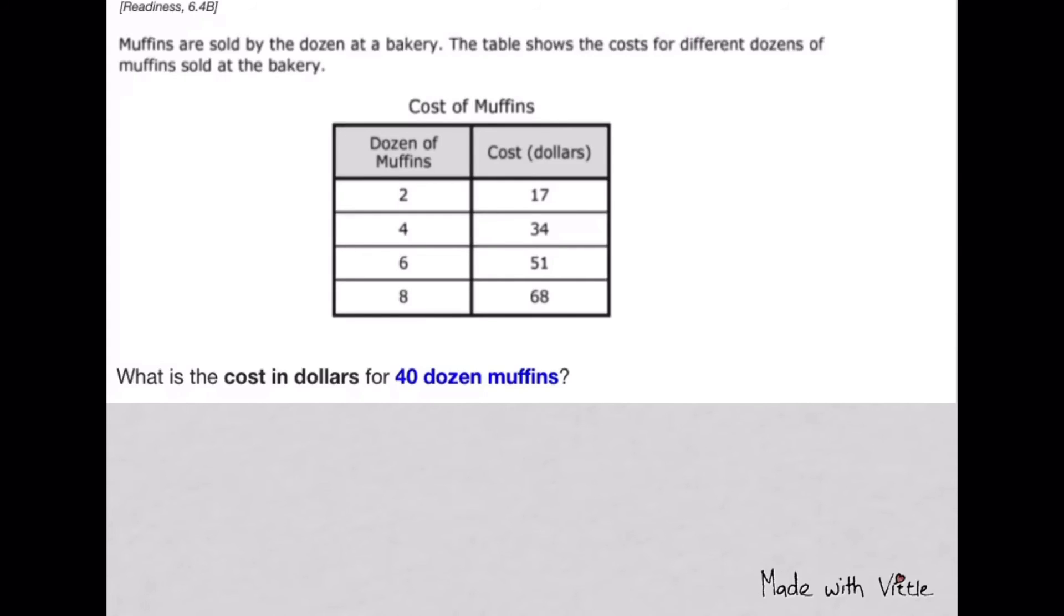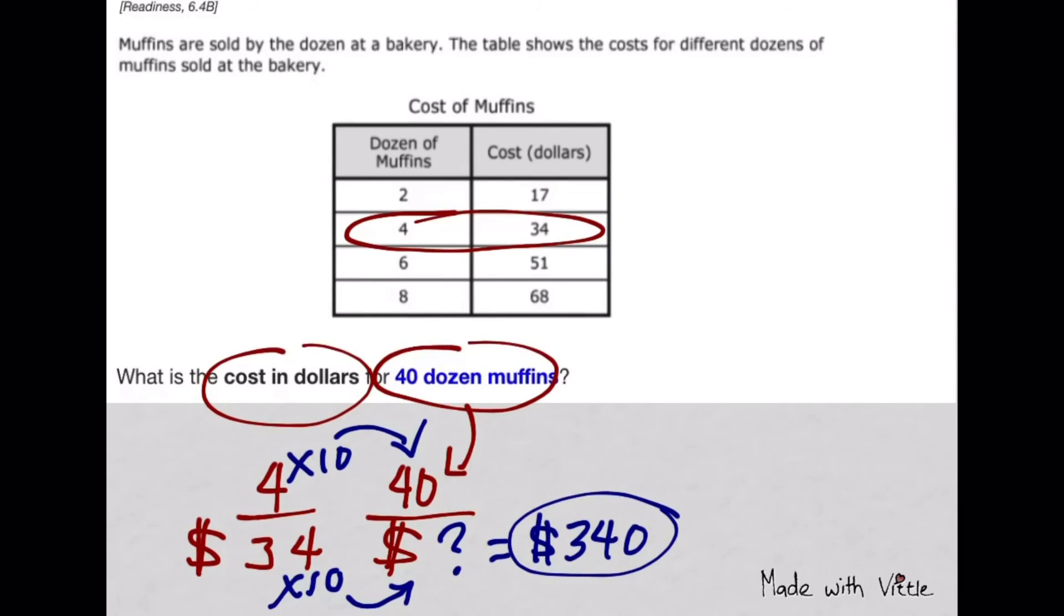Muffins are sold by the dozen at a bakery. The table shows the costs for different dozens of muffins. The first column is the number of dozens, the second column is the cost in dollars. If you're buying 2 dozen, it's $17. 4 dozens will be $34 - it's like double the 17, and so on. But the question is about the cost of 40 dozen muffins. What you can do is look at the table and get information from it. It's like setting up a proportion. The 4 is a factor of 40, so you can easily change it by multiplying by 10. Do the same thing at the bottom - the $34 will be times 10 as well, which is going to be $340. This is the cost of 40 dozen muffins.